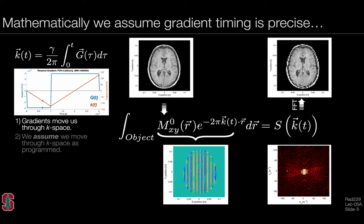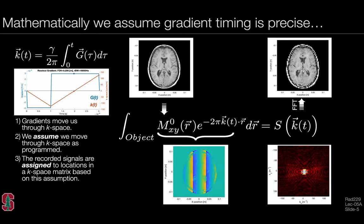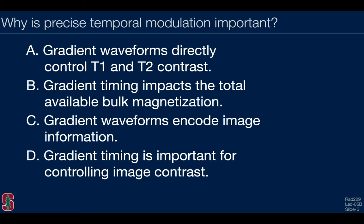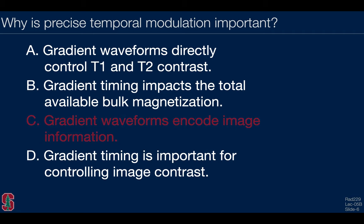Gradients move us through k-space, and we assume we move through k-space precisely as programmed. The recorded signals are assigned to locations in a k-space matrix based on this assumption. If this assumption fails, the recorded k-space is distorted relative to reality. The most important reason for precise temporal modulation is that gradient waveforms encode image information.